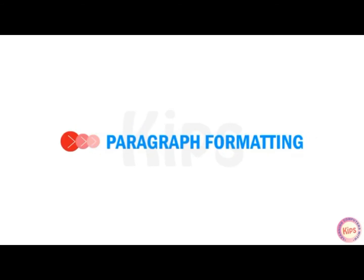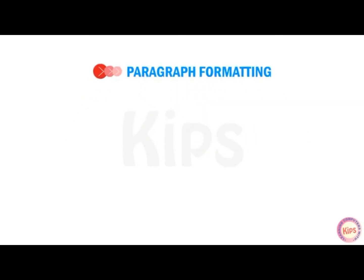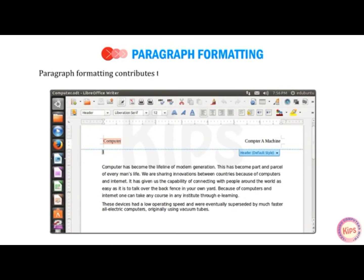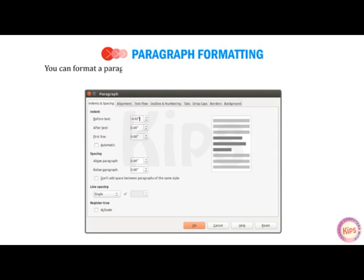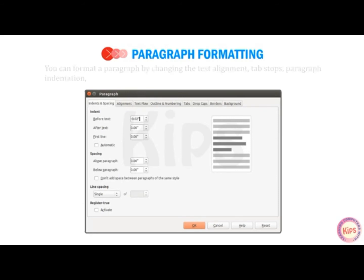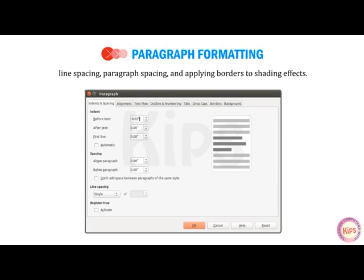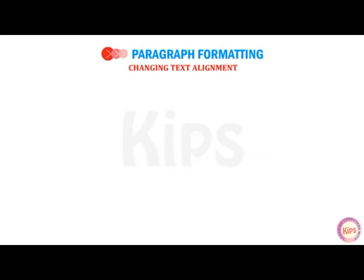Let us now discuss about paragraph formatting. Paragraph formatting contributes the most to the final appearance of the document. You can format a paragraph by changing the text alignment, tab stops, paragraph indentation, line spacing, paragraph spacing, and applying borders and shading effects. Let me tell you how to change text alignment.